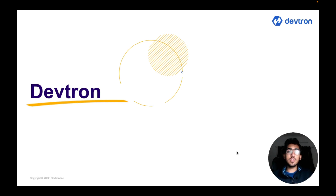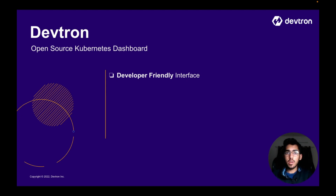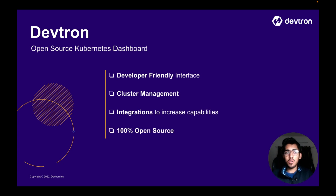Now let's see how Devtron comes into the picture. Devtron is an open source Kubernetes dashboard which provides a seamless software delivery workflow for your applications. The dashboard provides a developer-friendly interface, giving you complete control over the applications you want to manage and deploy. You also have the ability to fully manage and monitor your cluster activities, increase dashboard capabilities using various integrations, and it is completely open source.